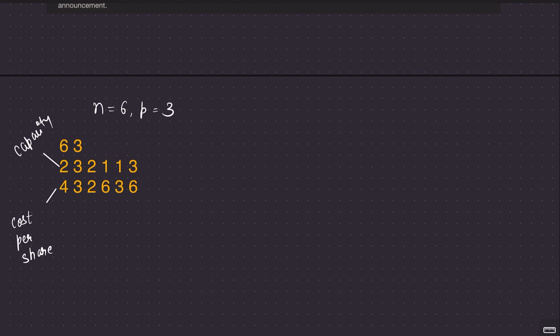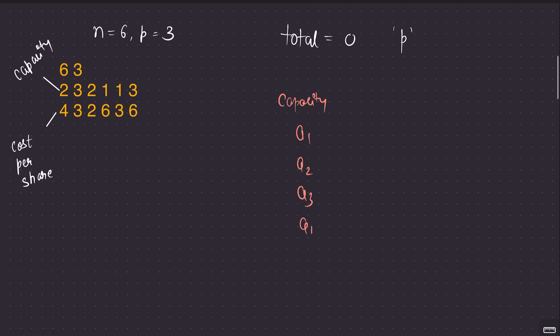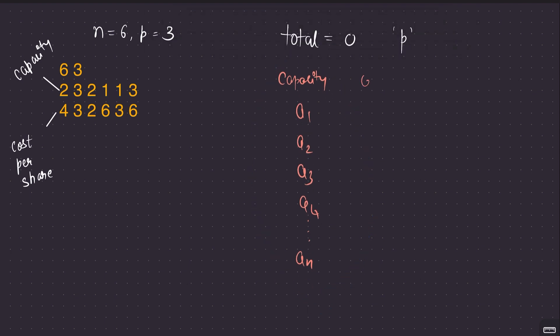We have to announce to N residents in total. There is P given - the cost of announcement by the chief. The array given has two things: capacity, meaning how many maximum residents the i-th resident can inform (given as A1, A2, A3, A4, and so on), and cost per share (given by B1, B2, B3, B4, and so on). One observation is clear: your cost will be greater than or equal to P, because you have to announce at least one resident.